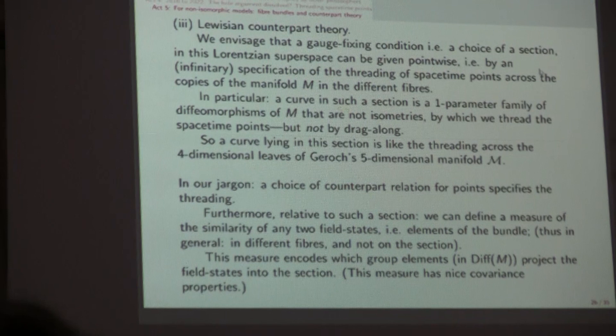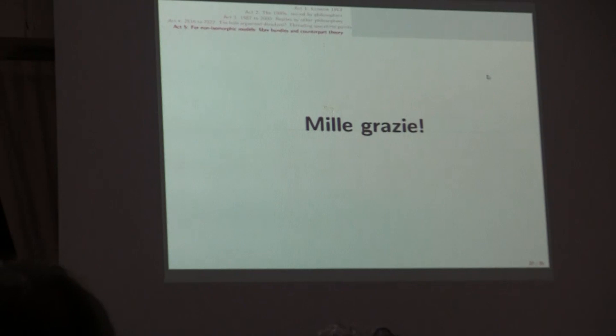So a curve that lies in such a section is precisely like a curve in Geroch's five-dimensional manifold that cut each of his four-dimensional leaves just once. So this is in philosophy jargon a matter of a counterpart relation which specifies a threading, and actually we can define a natural measure of the similarity of two field states using the structure group, and this measure has nice covariance properties. Thank you very much.